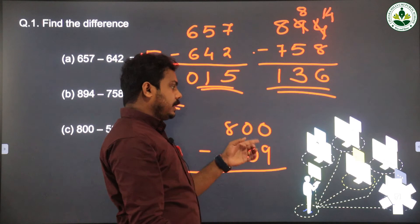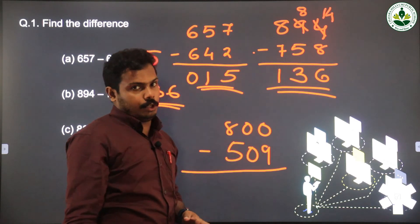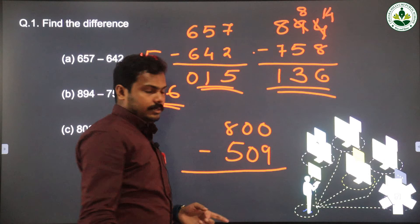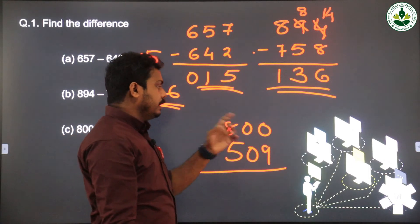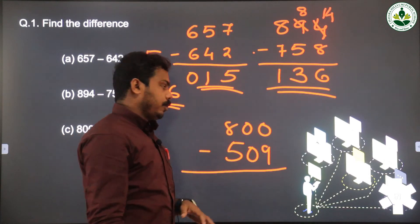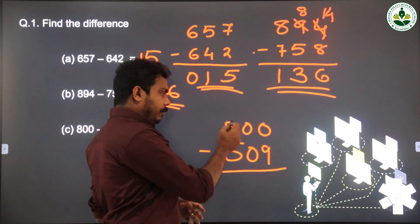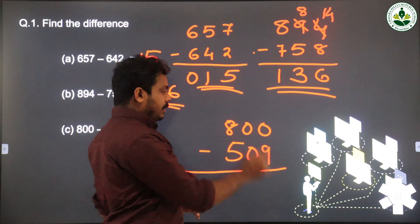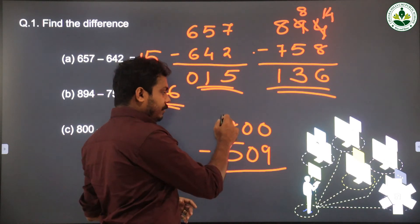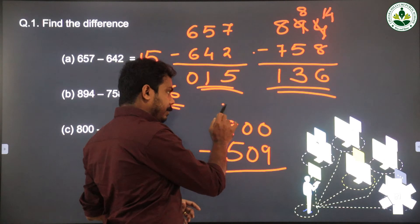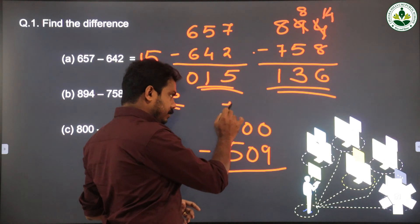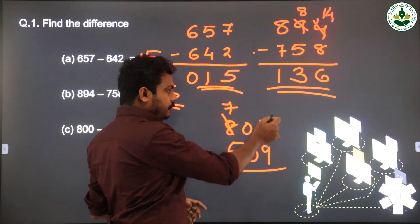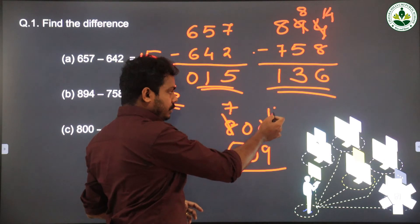We need to subtract 9 from 0, so we need to take 1 from the next place. But that is also 0, so we need to move to the next place — the hundreds place. Here it is 8; we take 1 from here, then it becomes 7, and the ones place digit becomes 10.